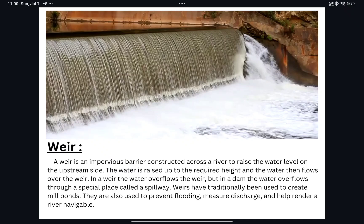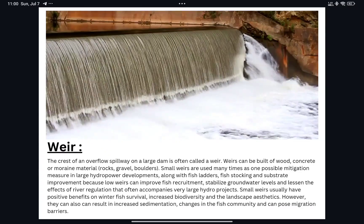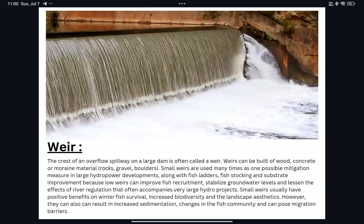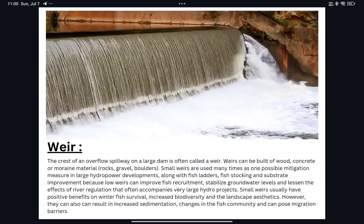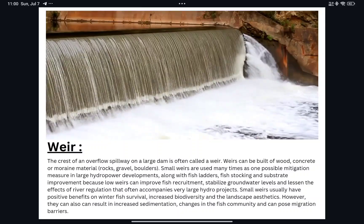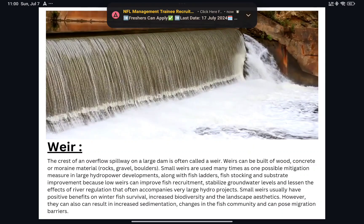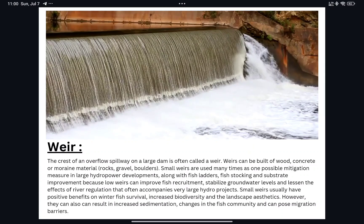Weirs have traditionally been used to create mill ponds. They are also used to prevent flooding, manage major discharge, and help render a river navigable. The crest of an overflow spillway on a large dam is often called a weir. Weirs can be built of wood, concrete, or moraine material like rock, gravel, and boulders.